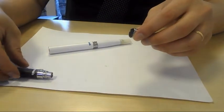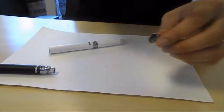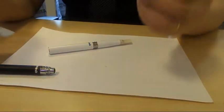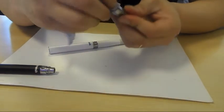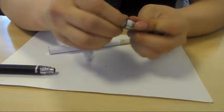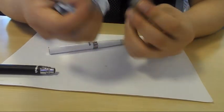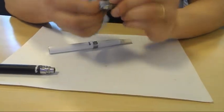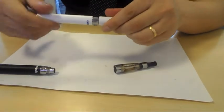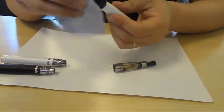Remove the battery, get a piece of lint-free tissue or cloth, and give the inner threading connection a wipe for both the clearomizer and cartomizer.